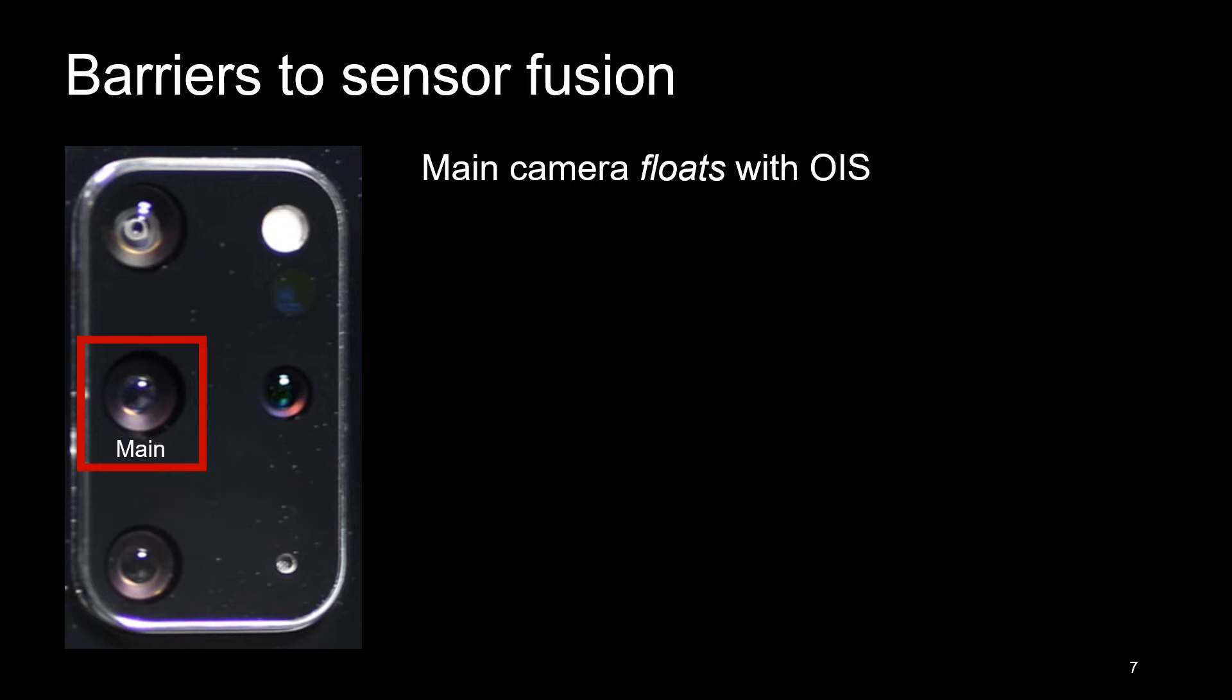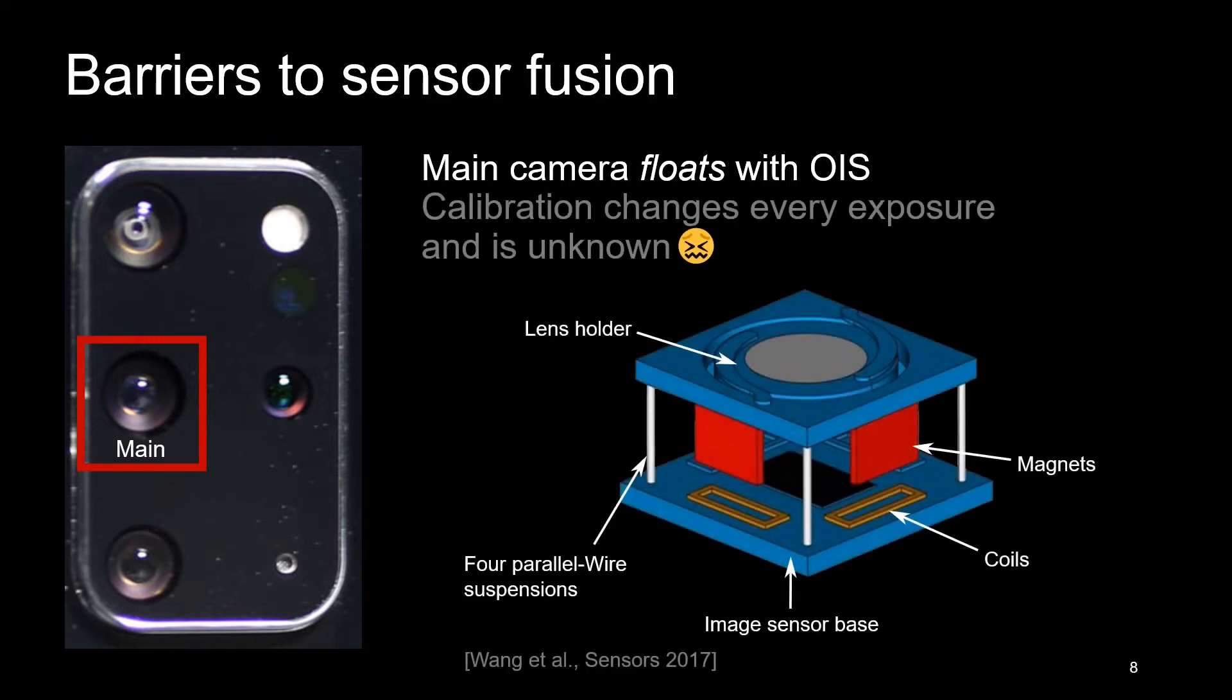There's one more critical issue. The main camera floats with Optical Image Stabilization, or OIS, to fix minor handshakes that cause blur. So the calibration changes at every exposure and it is unknown. OIS uses a magnetically-actuated lens holder with a response that varies with the phone's acceleration. So, can we perform sensor fusion on floating cameras?